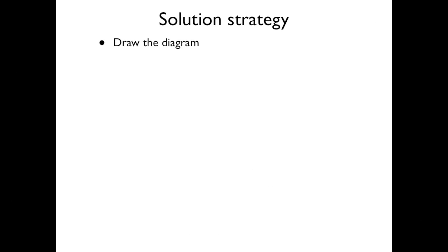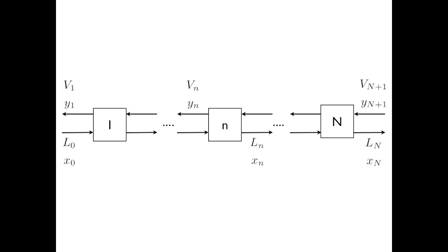Our first step in the solution strategy is to draw the diagram. This diagram is basically our general diagram for counter-current flow through a series of equilibrium stages. We've left off the subscript because there's only one solute that we're interested in in this case.